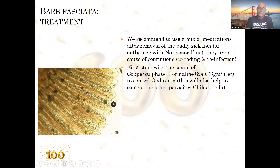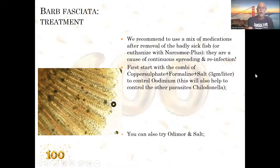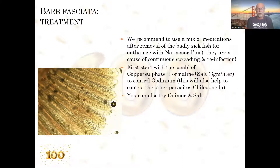First of all, I would suggest a combination treatment of copper sulfate together with formalin and salt at three grams per liter. In my books I have a formula developed that shows you how much copper sulfate to use with formalin — or ask your fish doctor, as it's also available on the internet. This helps you control the oodinium and velvet disease, and at the same time the formalin, salt, and copper sulfate will control other parasites like chilodonella, or any costi or other flagellate parasites.